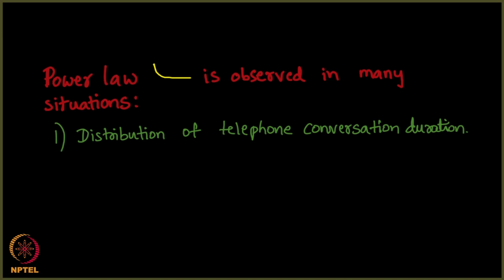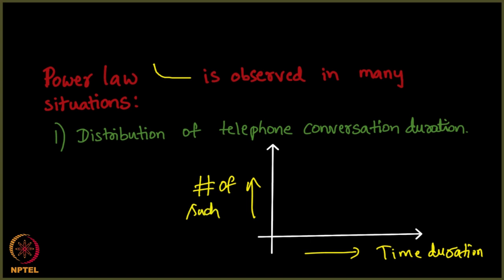For example, what does this mean? This means you again plot x and y axis. On x axis, you plot the time duration of phone calls and on y axis, you plot the number of such phone calls or percentage of such phone calls. Both are one and the same and you will observe that it is again a drop like this.